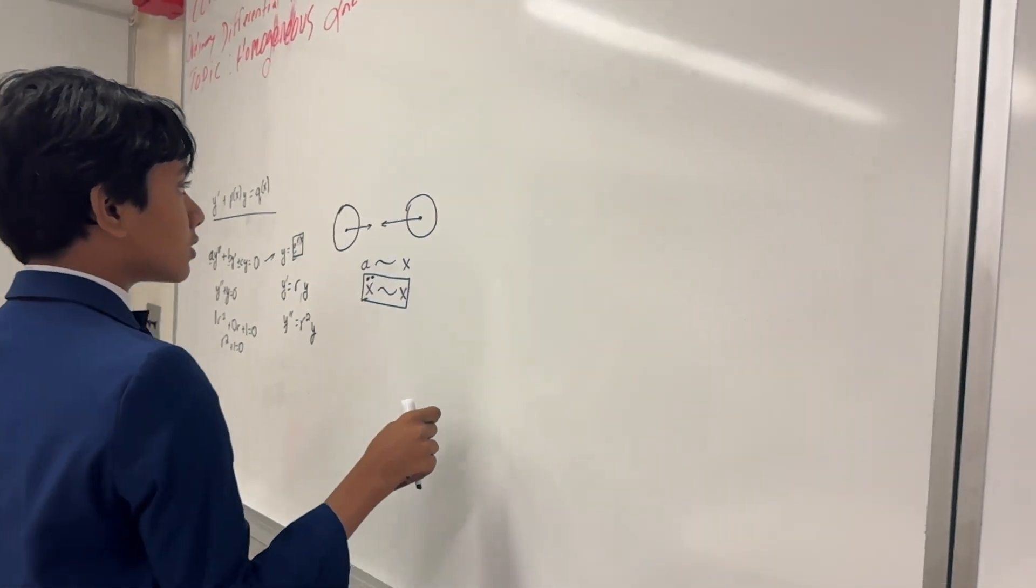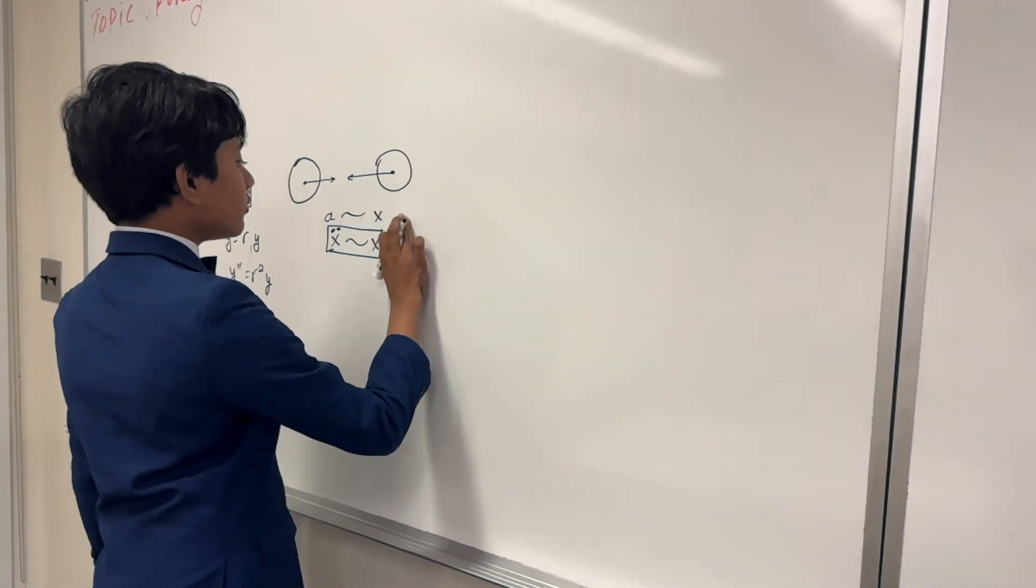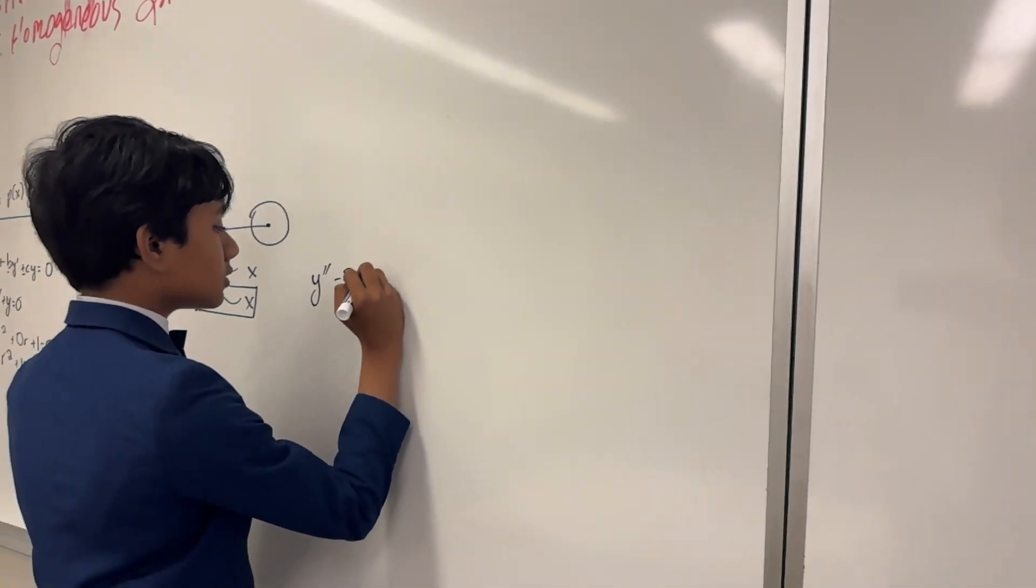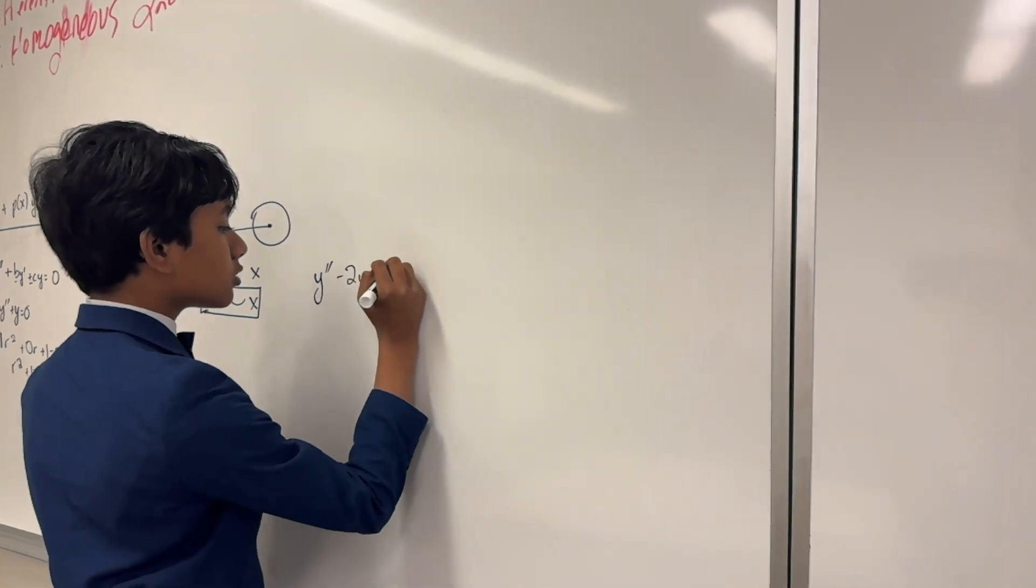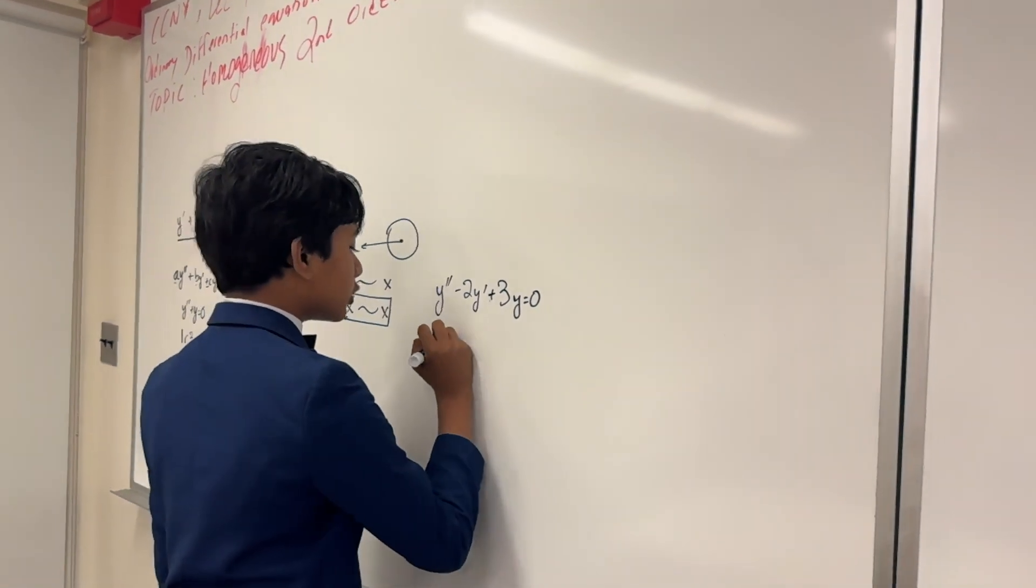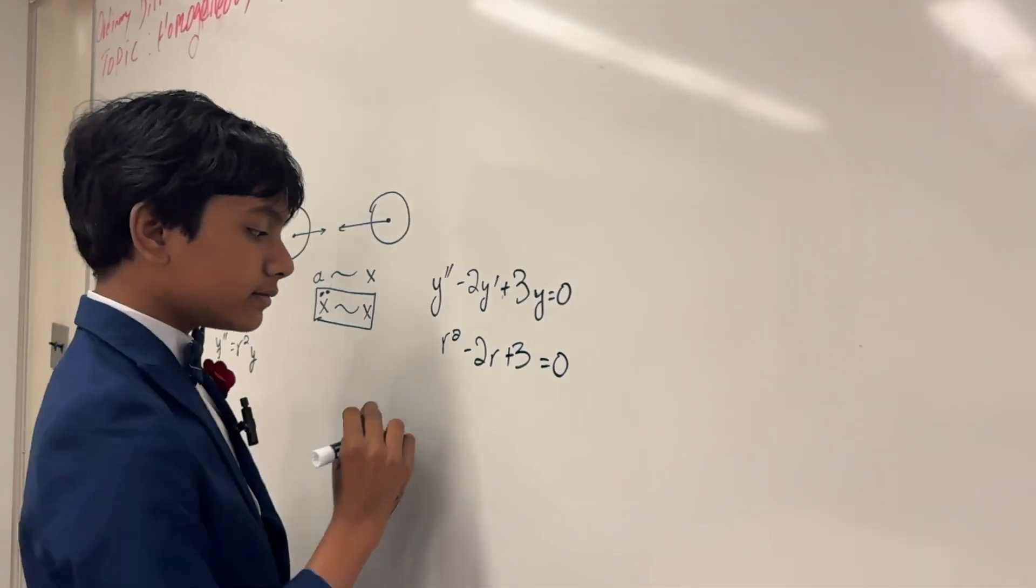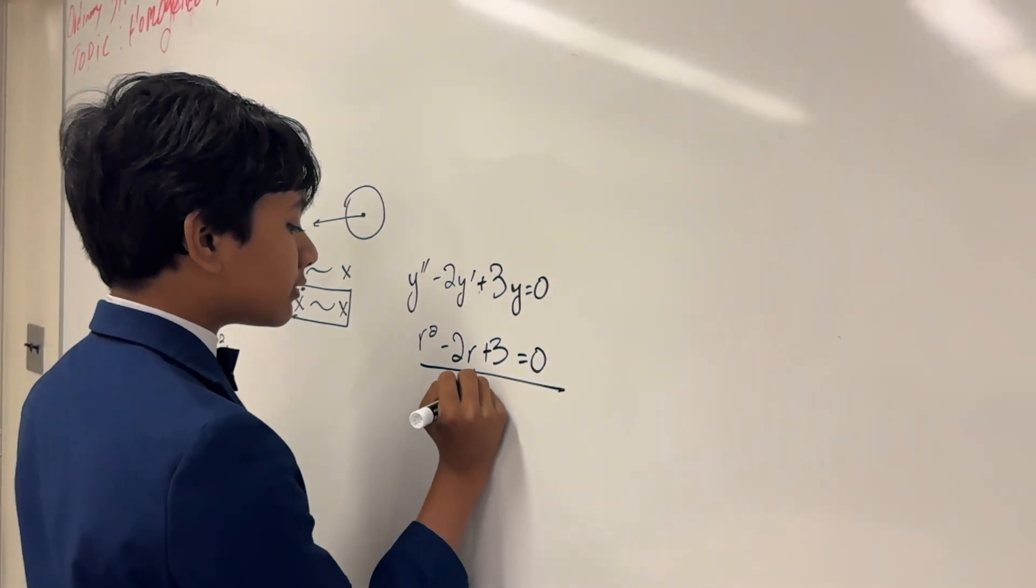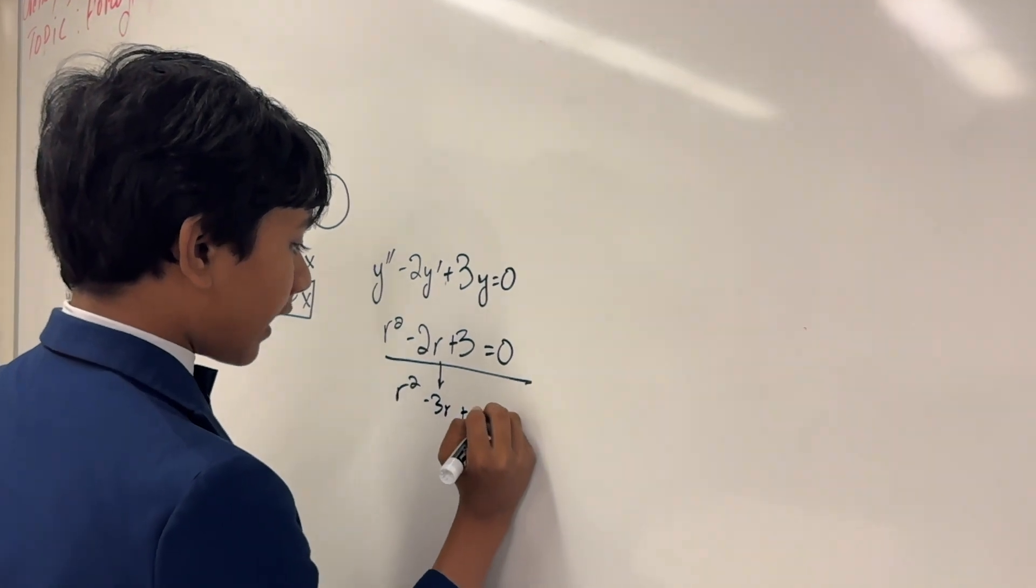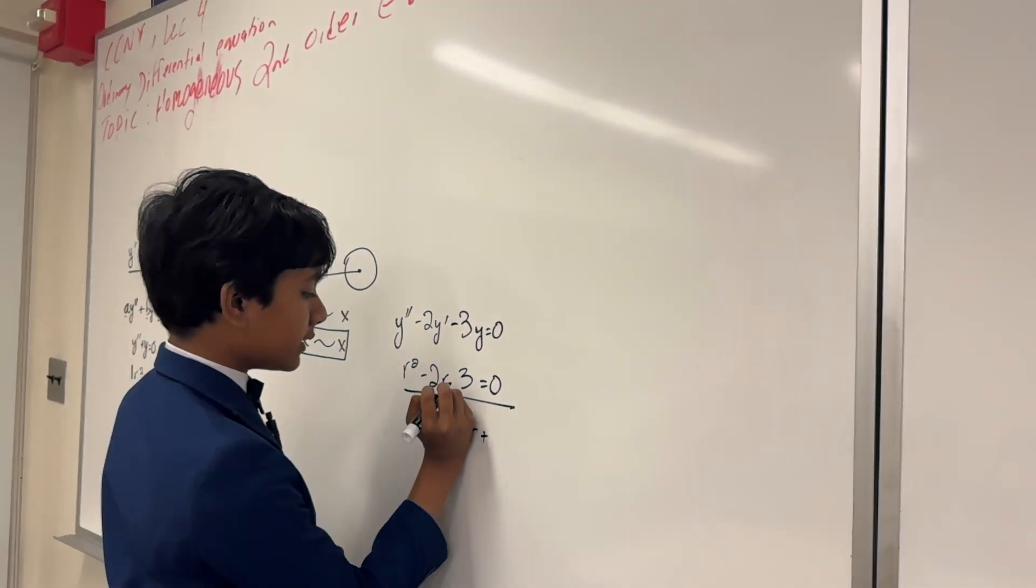Alright. So for example, let's try y prime prime minus 2y prime plus 3y is equal to 0. So then our characteristic polynomial is r squared minus 2r plus 3y. So then, what happens when we actually solve this? Well, it shouldn't be the hardest thing in the world to factor it in.